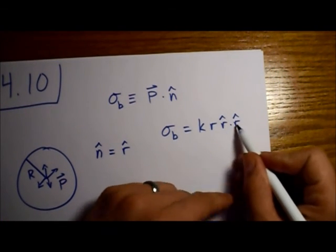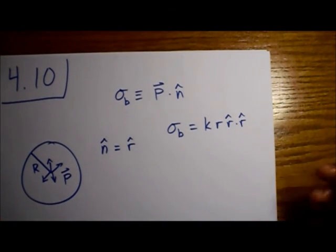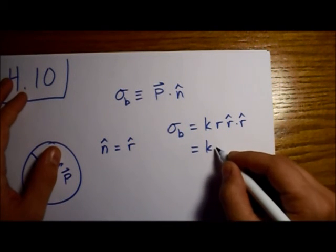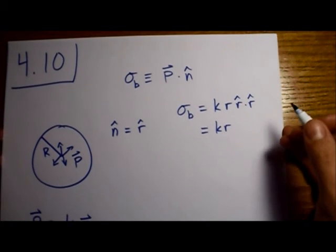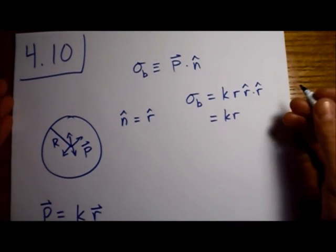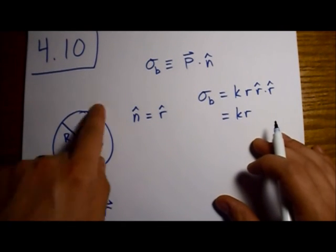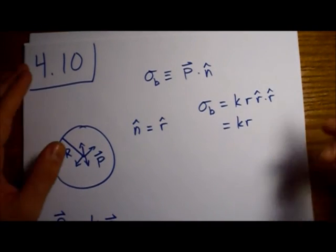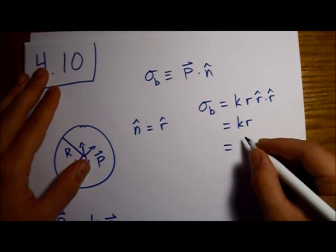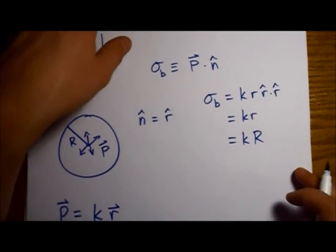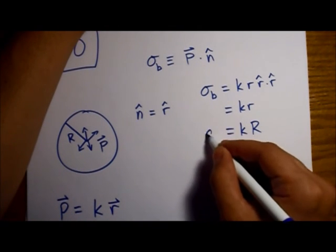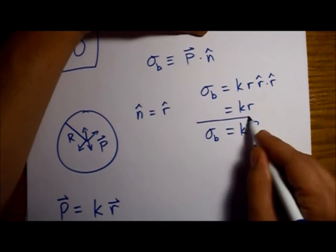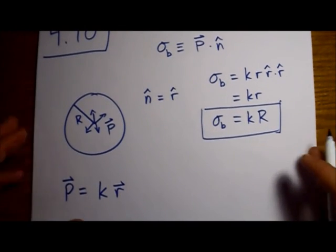Let's find our bound surface charge. We take our polarization and write this R vector as the magnitude R multiplied by the unit R̂ vector. We're dotting this into n̂, which in this case is just R̂. The R̂ dotted with itself is 1, so our bound surface charge density is equal to KR. Since we're at the surface of the sphere, the magnitude is big R.